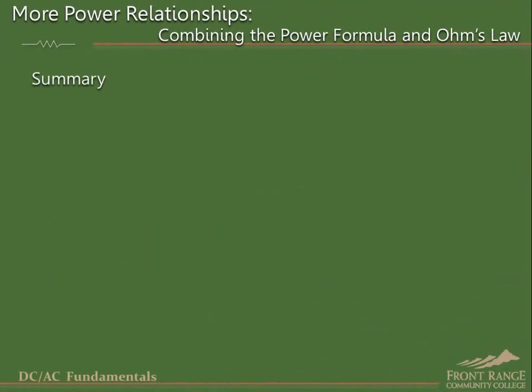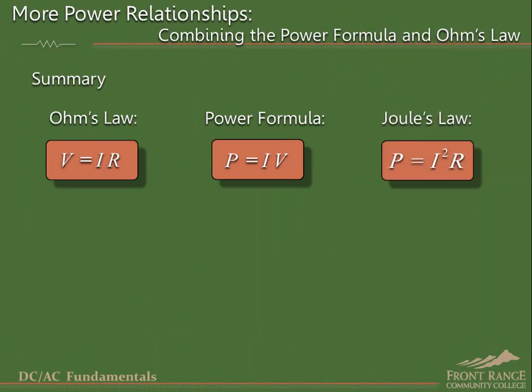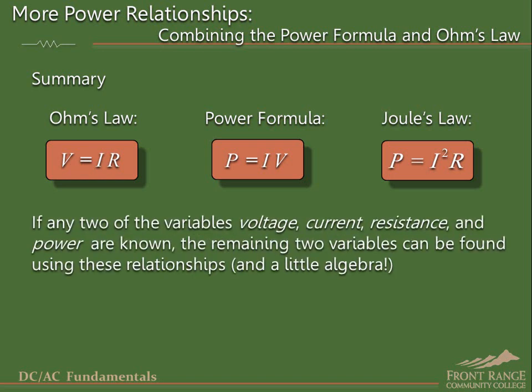Previously in this chapter, we explored Ohm's law and the power formula, then combined the two to arrive at Joule's law. Notice there are four distinct variables in this set of three equations: voltage, current, resistance, and power. If any two of these variables are given, the remaining two variables can be found using the equations shown here, along with a little algebra. Here are some more examples.